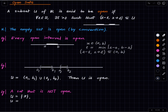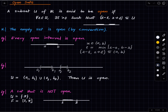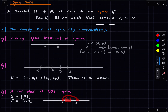A somewhat more interesting example is any closed interval, say F = [2, 3]. This is not an open set. F is everything between 2 and 3 including the endpoints. For points strictly inside you can make a room contained in F, but the boundary points cause a problem — no room around them is contained in F. So this is not an open set.